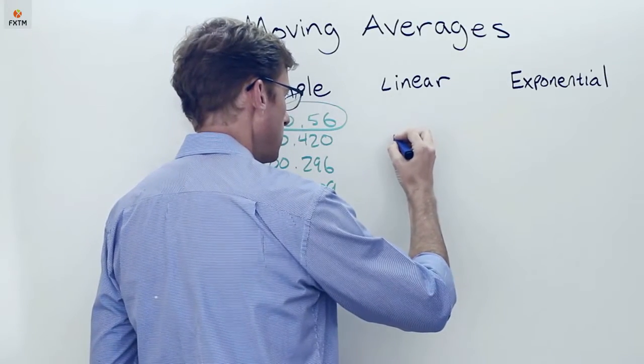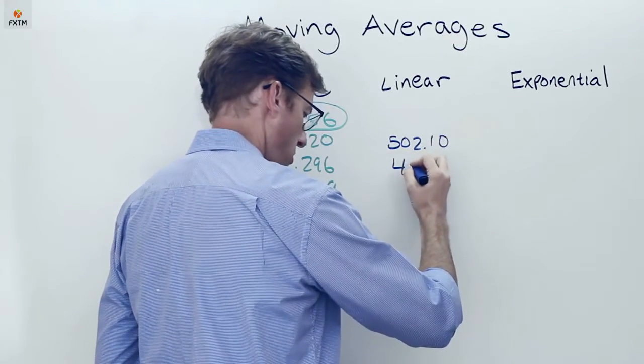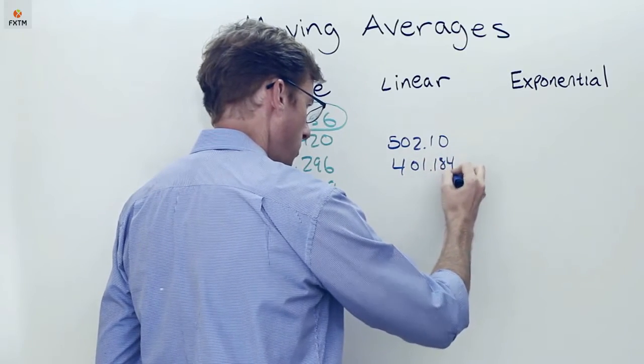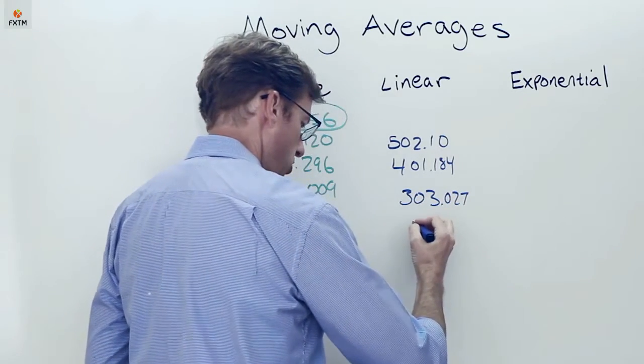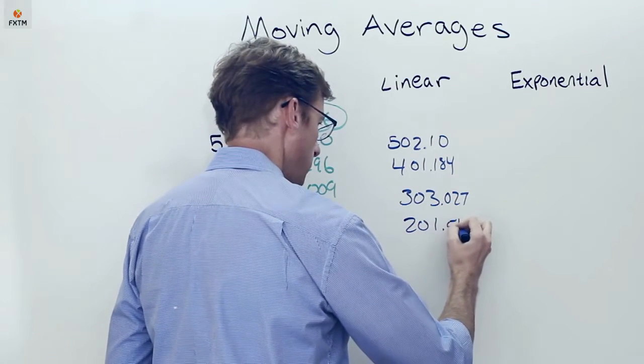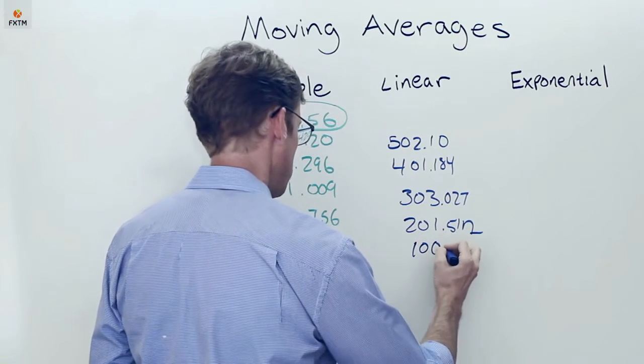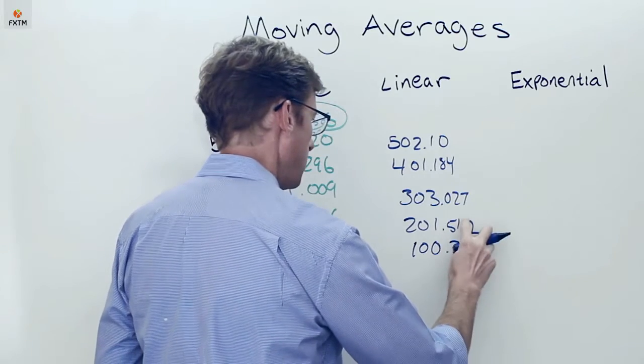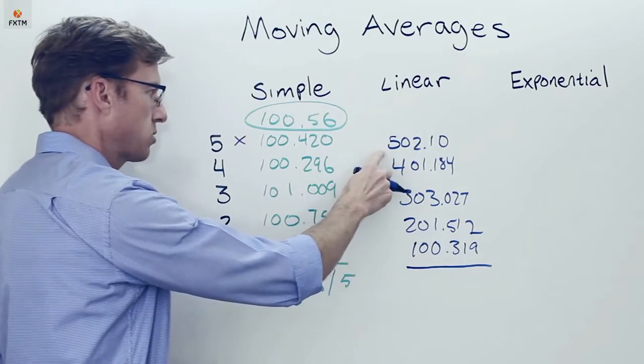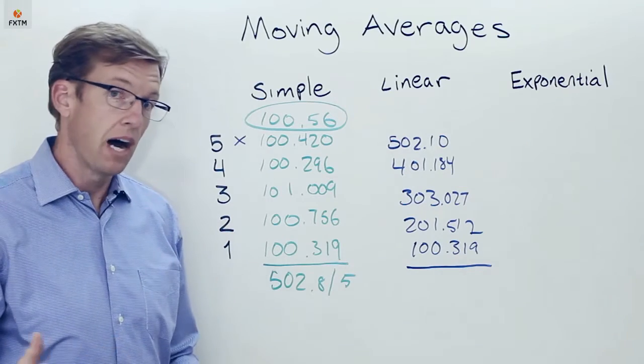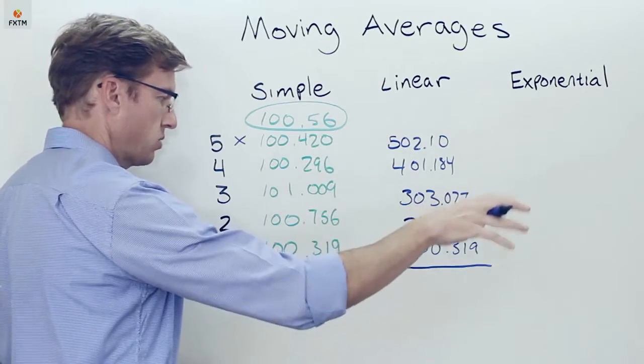So that's going to give me a value here on the linear one of 502.10, 401.184, and then I get 303.027, and then 201.512, and then finally, we get this one here, which is going to be the same 100.319. Now, what's important about this is that you'll notice the weighting here. Obviously, the most recent day is five times more important or more weighty than the furthest day in history.